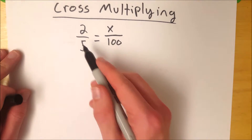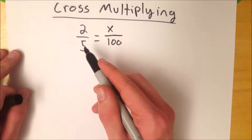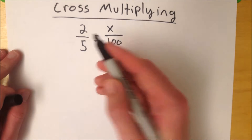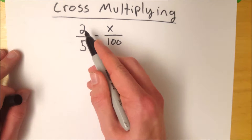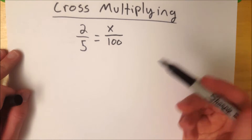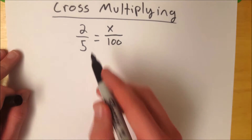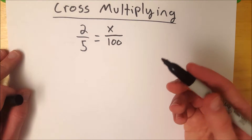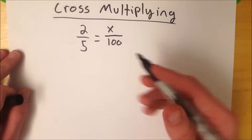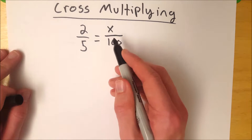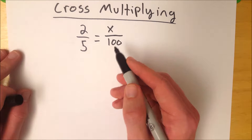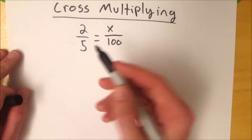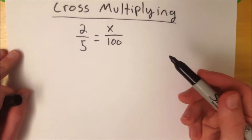So let's say we have two-fifths, and we want to know how to represent it as a percentage — what percentage 2 is out of 5. In order to do that, we set it equal to x over 100. Percent means out of 100, so if we set it equal to this ratio and solve for x, we'll get the percentage that 2 is out of 5.